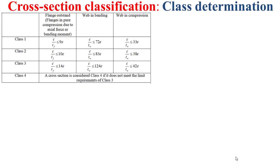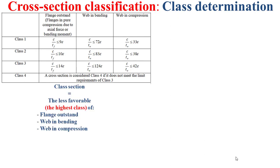Now I will explain how to determine the class of the cross-section based on this table. As you can see, this table presents three cases. The first one is about the flange outstand, which means flange in pure compression due to axial force or bending moment. The second case is web in bending, and the third case is web in compression. The global cross-section class is determined as the least favorable — that is, the highest class — of flange outstand, web in bending, and web in compression. TF means the thickness of the flange, TW means the thickness of the web.